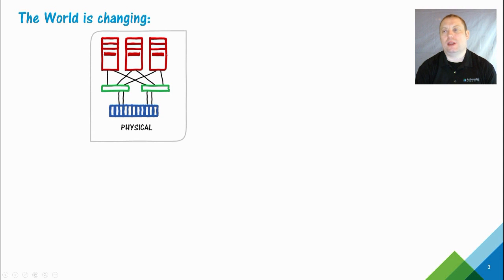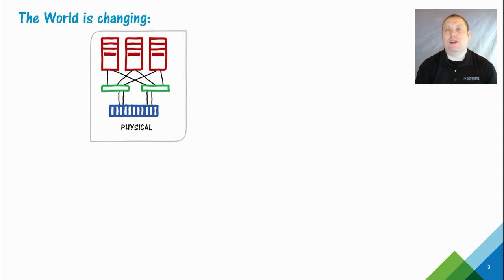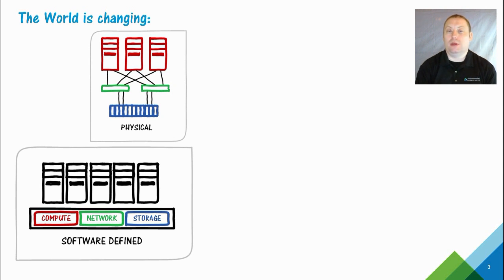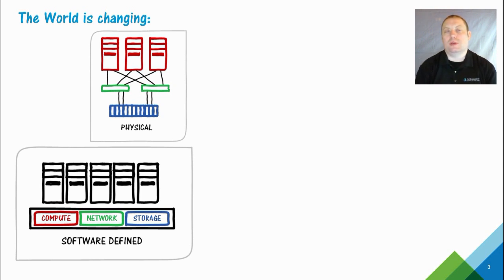After a while, people decided that virtualization wasn't something they were going to add on or do on a case-by-case basis. They decided they were going to start virtualizing everything — virtualized first. They started buying hardware specifically to run VMware or vSphere, typically very high-end processors with lots of memory, because they knew they were going from running one operating system and application to maybe running 10, 20, 30, 40, or 50 virtual machines on it. So you tended to see people buying hardware specifically for virtualization.